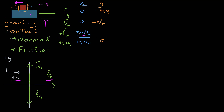Now if we look in the y dimension, we have the force due to gravity, whose magnitude is the mass of red times g, pointing in the negative y direction. There's the normal force of blue on red — I've defined that magnitude to be n sub r — and that's pointing in the positive y direction. The acceleration in the y is zero.